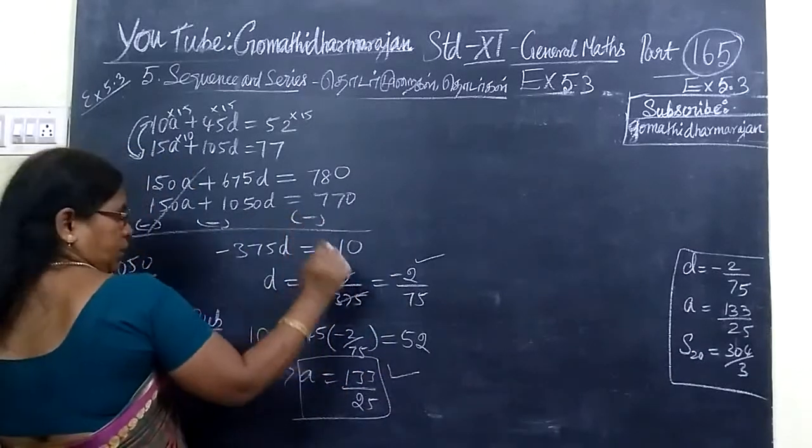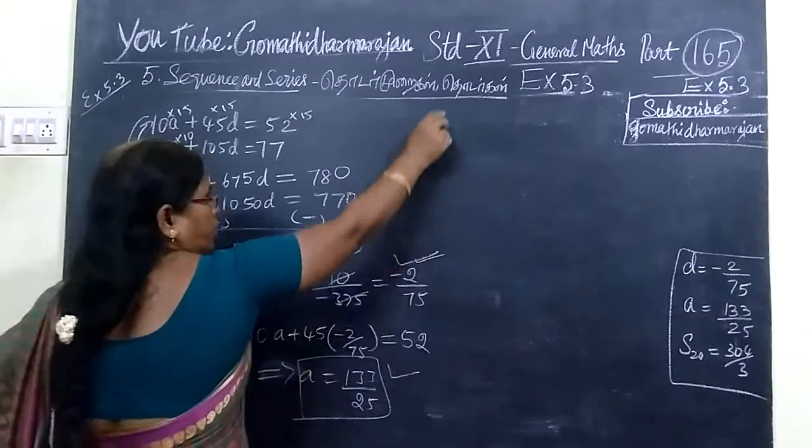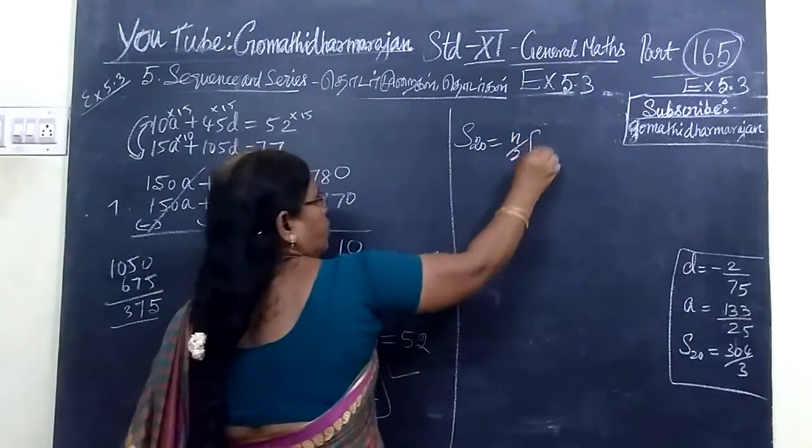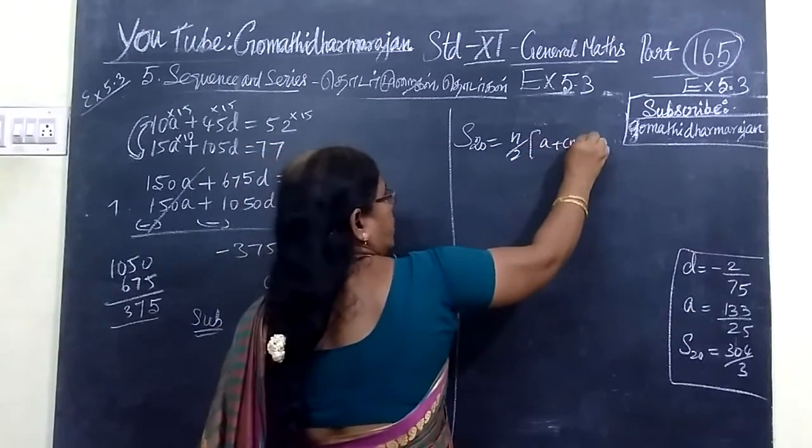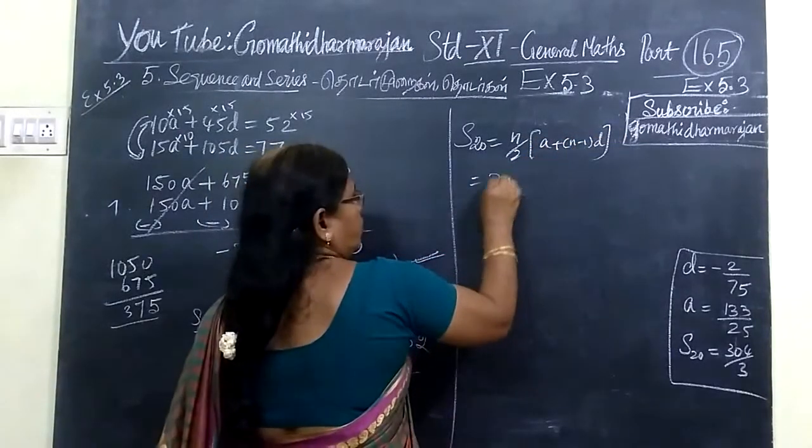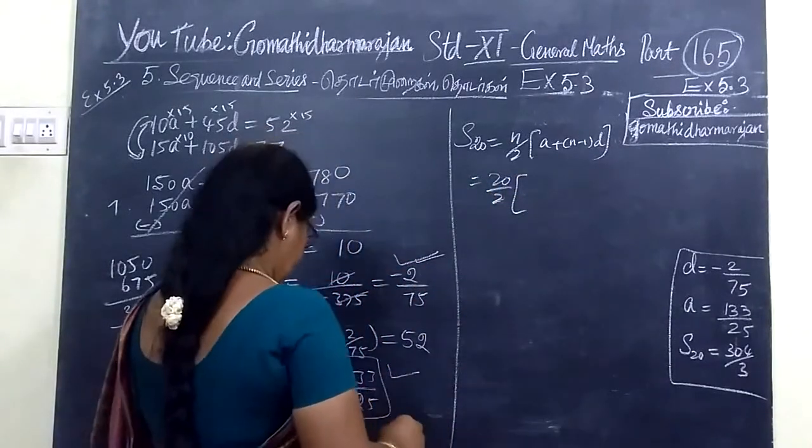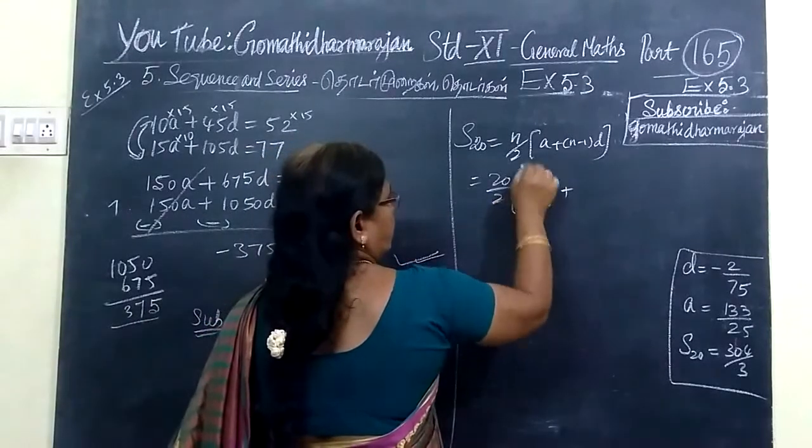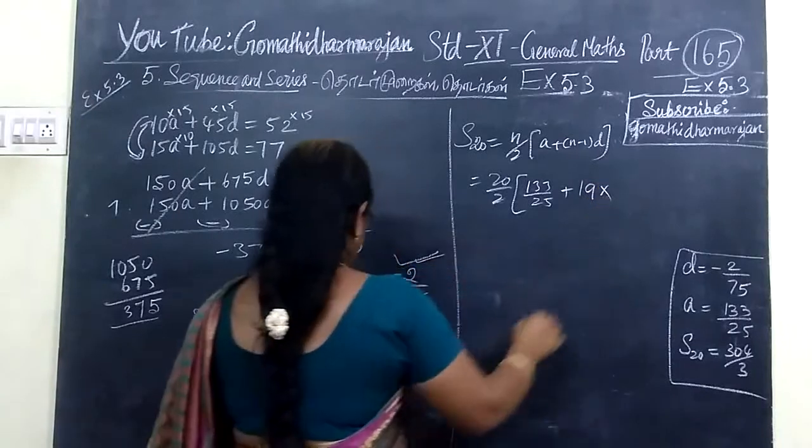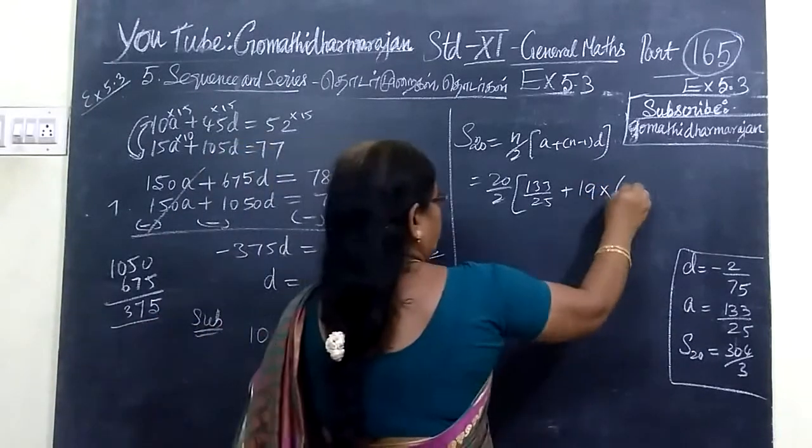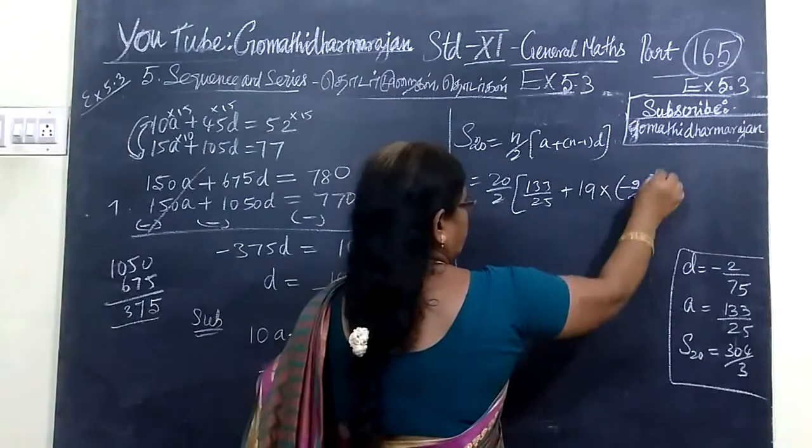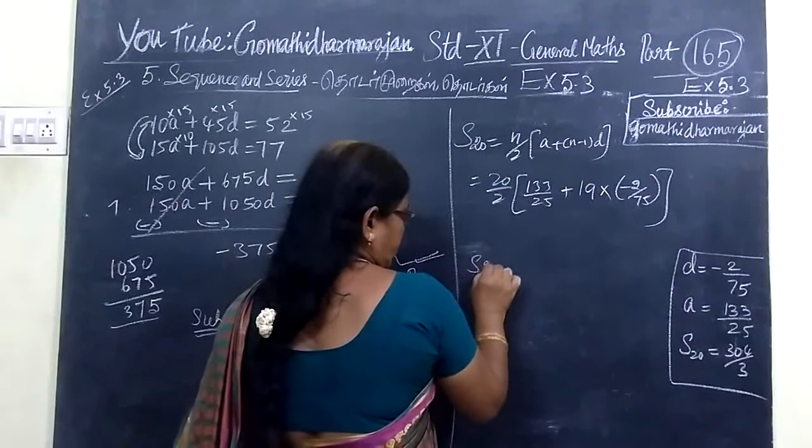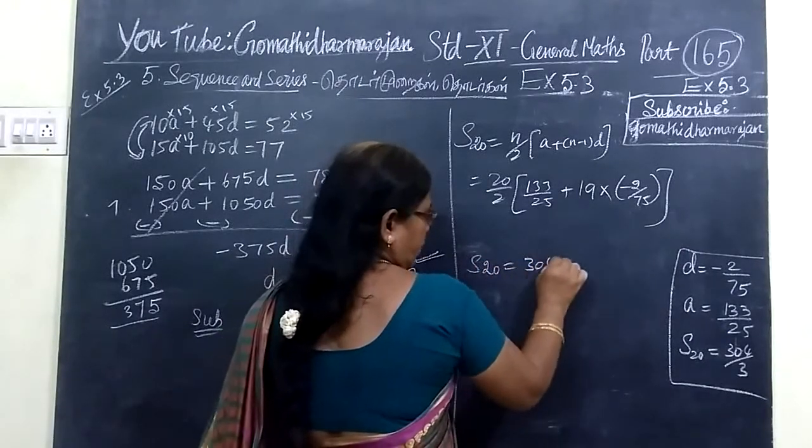Now, A is already there, D is already there. Next, we are going to find S20. So, S20 is equal to N by 2, 2A plus N minus 1 into D. So, 20 by 2, A equals 133 by 25 plus N minus 1, 20 minus 1 is 19, into D value minus 2 by 75.